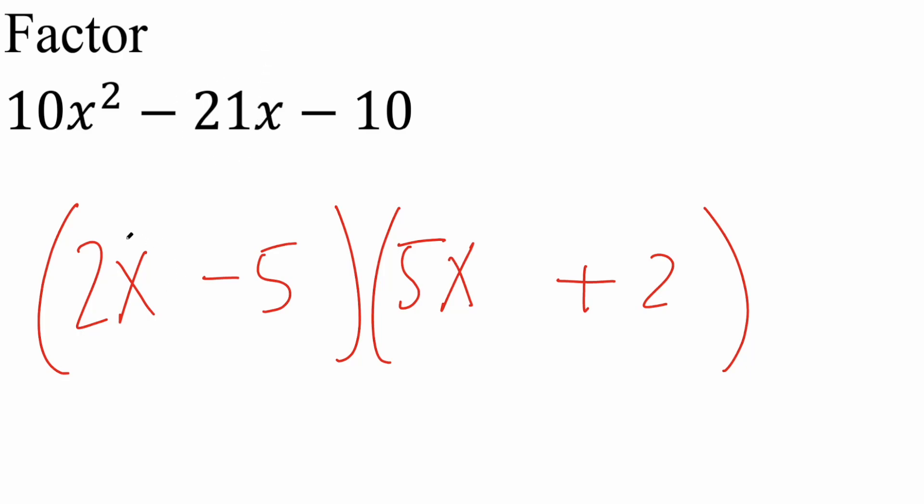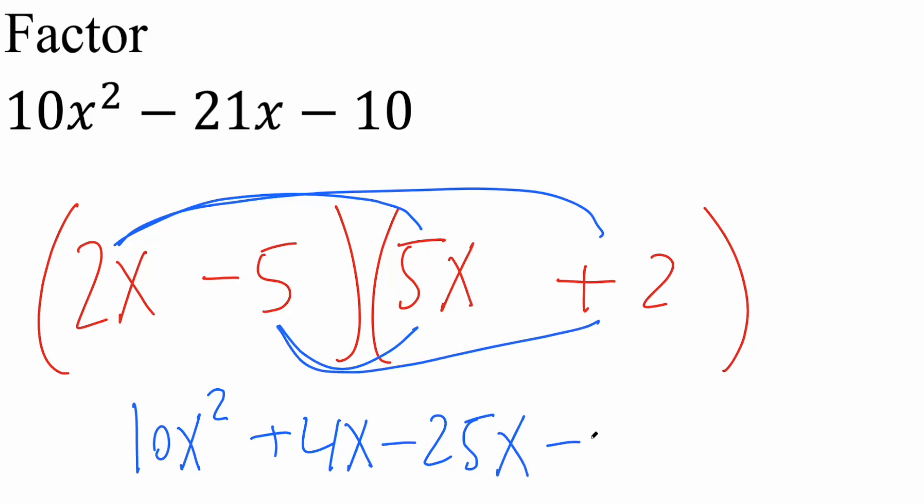Next, we can expand just to prove it. So we can do 2x times 5x, and we would get 10x squared. We could do 2x times 2, and we would get 4x. We could do negative 5 times 5x, and we'd get negative 25x. And lastly, we can do negative 5 times 2, and we would get negative 10. And we can see if it matches. Negative 10 matches, 10x squared matches, and 4x minus 25x is in fact negative 21x. So this is correct.